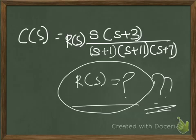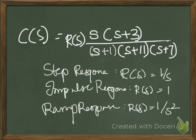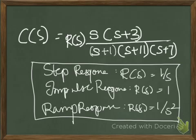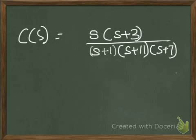For every unit time response you have a step response. The table shown here gives you the different values of R(s) for different types of responses. Once you have the R(s) value, substitute it into the C(s) equation. Since we are finding the step response, substitute R(s) = 1/s. So I am replacing R(s) with 1/s.